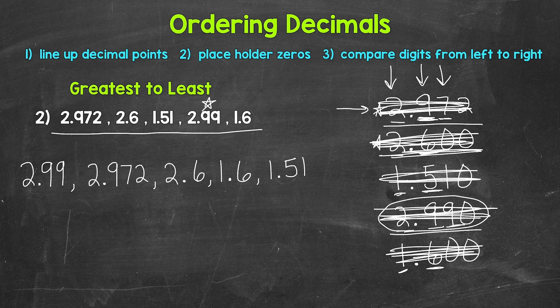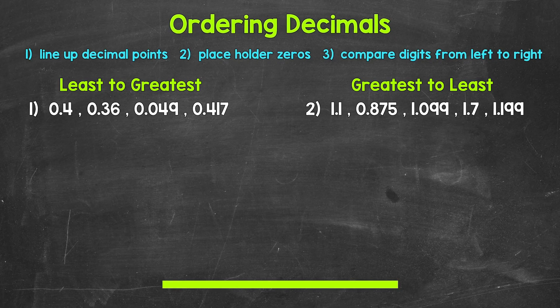Now that we've gone through some examples together, it's time for you to try some practice problems on your own. So have paper and a pencil ready. For number one, order the four decimals from least to greatest. For number two, order the five decimals from greatest to least. I'll give you three minutes and then we will go over the answers.